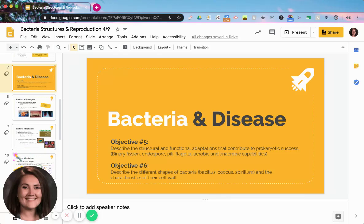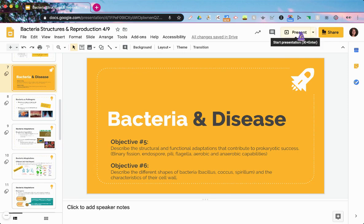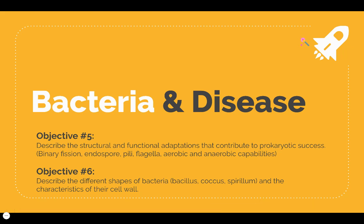Hi everyone and welcome back to part two of the screencast. We are going to be talking about bacteria and disease. We'll be wrapping up objective number five and starting on objective number six, which is to describe the different shapes of bacteria and the characteristics of their cell wall.